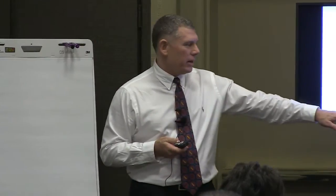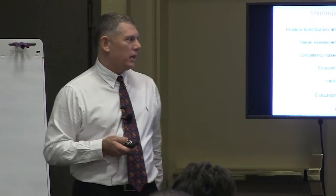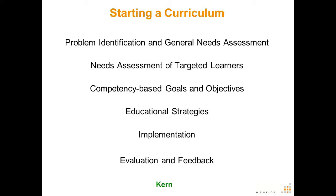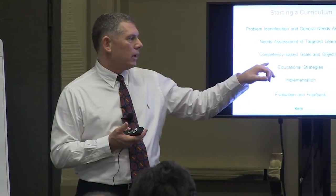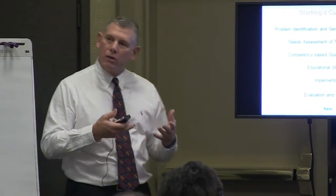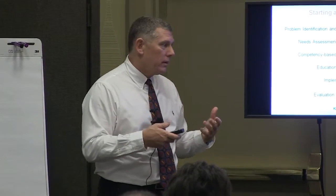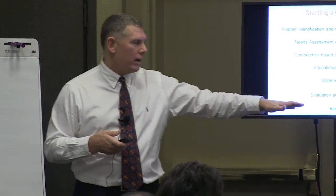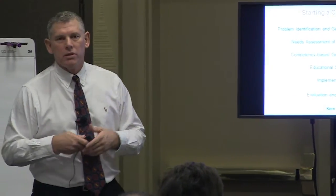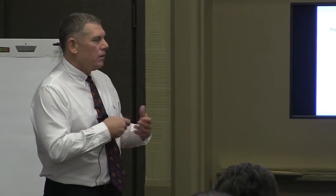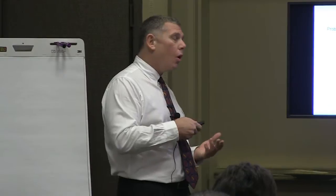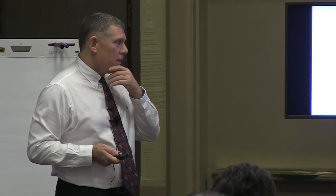Kern's six-step process for curriculum development: identify the problem and general needs assessment, target the specific needs of your learners, develop competency-based goals and objectives or milestones, put in educational strategies to get you there, implement it, and then evaluate via feedback from participants and faculty members — just like they'll evaluate this course.